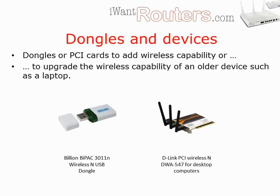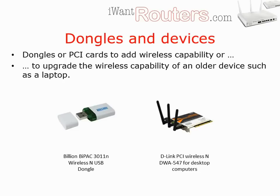Most devices such as laptops, tablets and mobile phones have built-in wireless connectivity these days, and if it's a fairly recent device it will probably have wireless N. If your device doesn't have wireless connectivity, or it is just too old for wireless N, there are plug-in devices you can use to get around this. For anything with a suitable USB socket, a wireless dongle will add wireless or upgrade the existing wireless — the Billion BiPAC 3011N is shown here, but there are lots to choose from. If you have a desktop that you want to add wireless to or upgrade, a PCI card is another option; just make sure you have a spare slot before you get one.